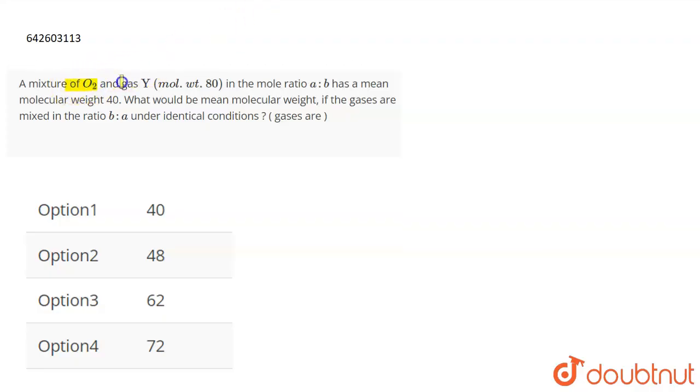The question is: a mixture of O2 and gas Y with molecular weight 8P in the mole ratio A is to B has a mean molecular weight of 40. What would be the mean molecular weight if the gases are mixed in the ratio B is to A under identical conditions?